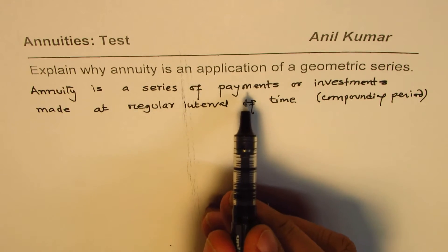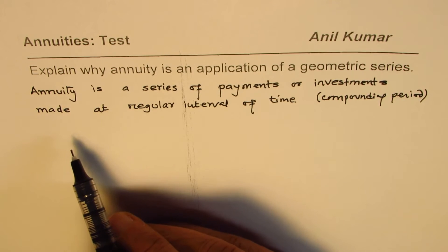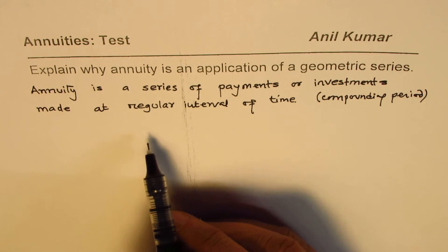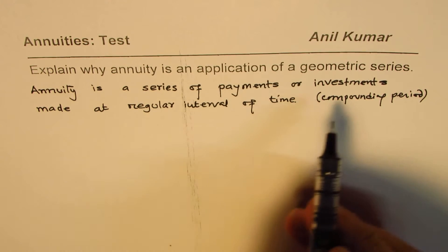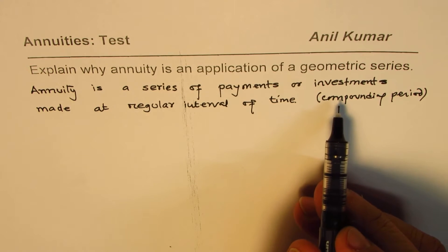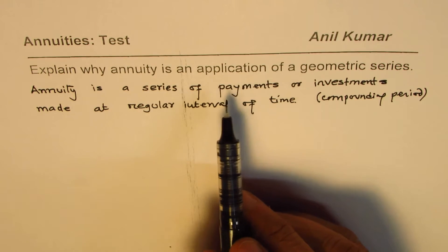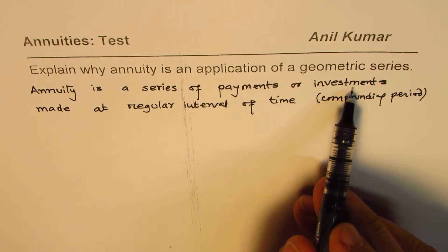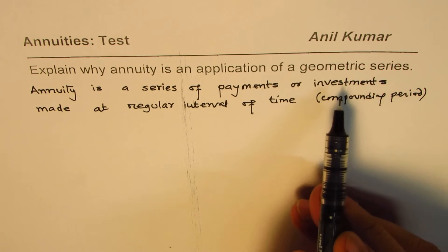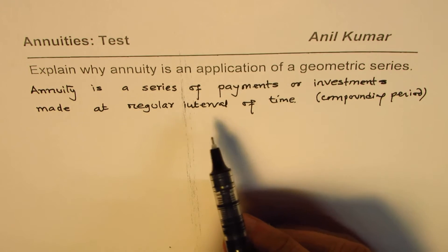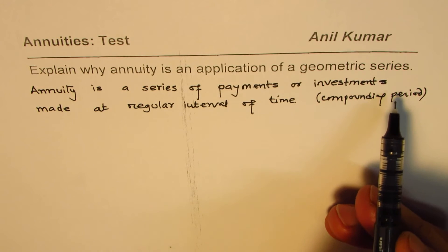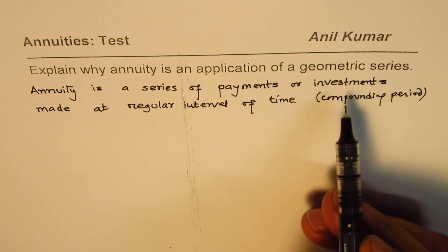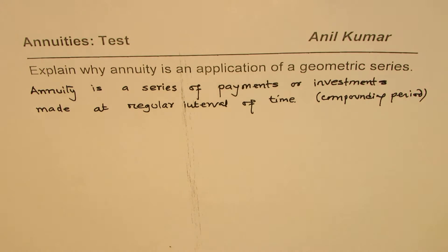When we say a series of payments or investments: payments is when you have a present value and then you receive money at regular intervals, let's say monthly $500. Investments is when you invest for the future — at the end of every month you invest, say, $500, and after five years you may have a lot of money in your account.